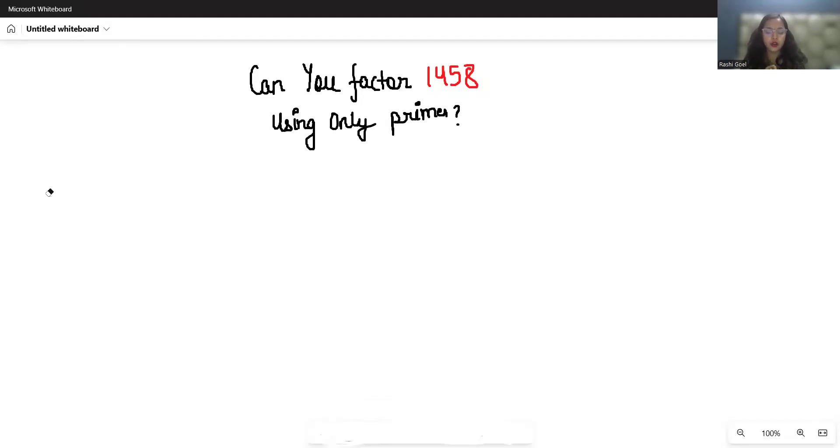Hey math fans, today we are going to break down 1458 into its prime parts using the division method. Let's take it one step at a time and reveal the magic inside the number. 1458 is an even number.